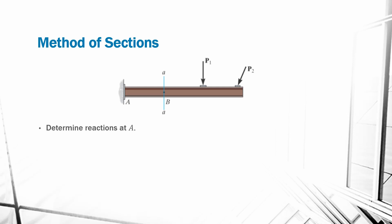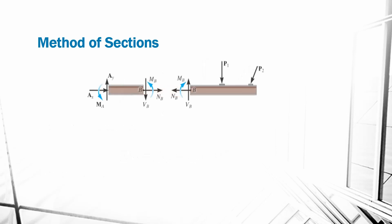We can apply the equations of equilibrium, which in this case would be the forces in the x direction, forces in the y direction, and moments at A, in order to find the reactions at that fixed support. After we find the reactions at A, we can create a cut at B. This cut will divide our beam into two sections, a section on the left and a section on the right. We can select either of these two sections and then apply the equations of equilibrium again to find the internal forces at B.